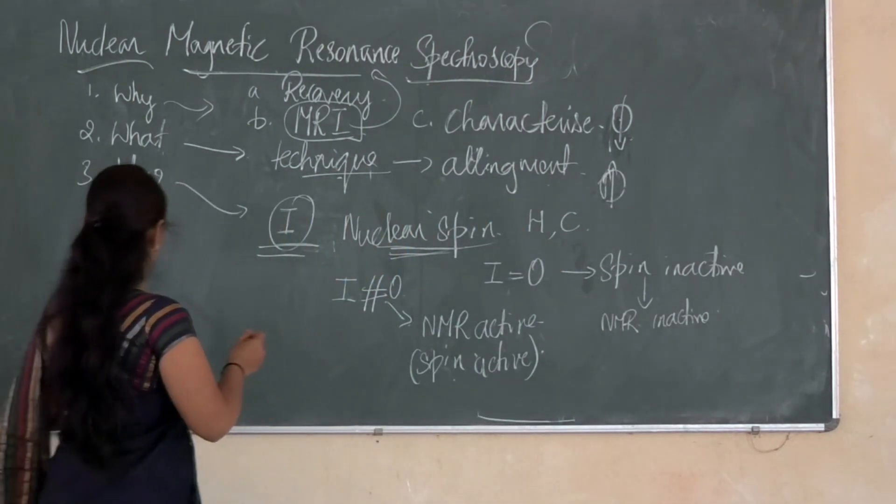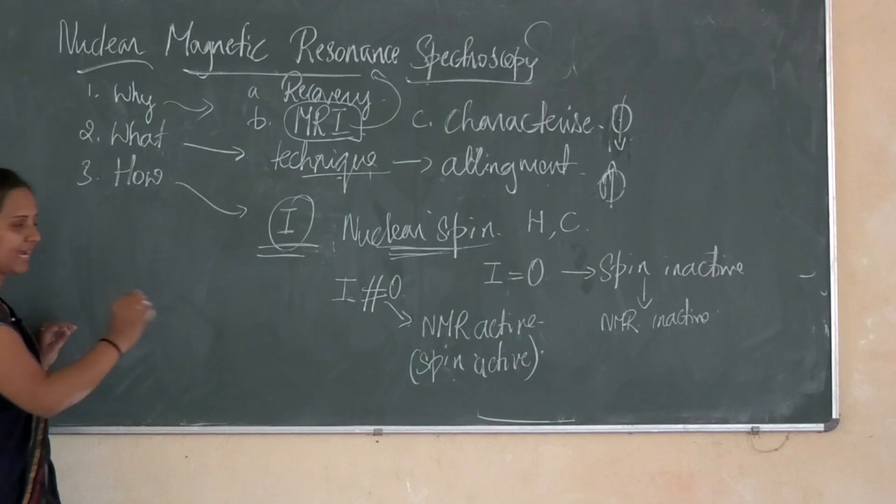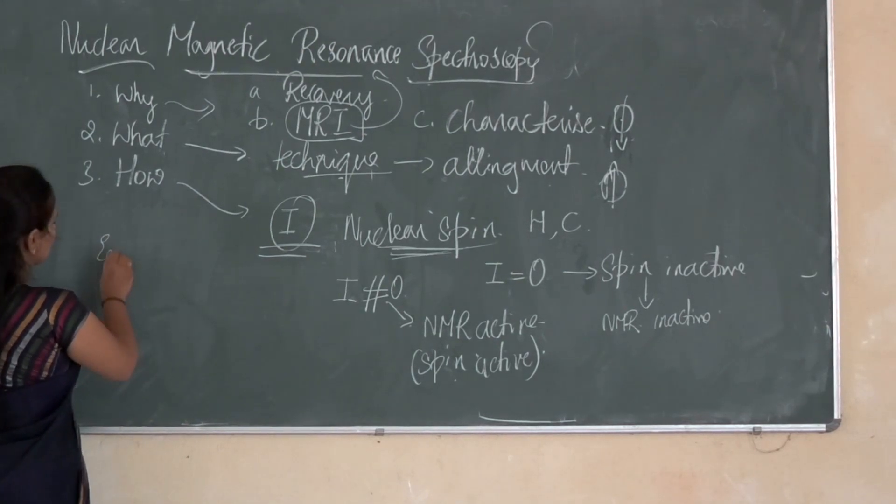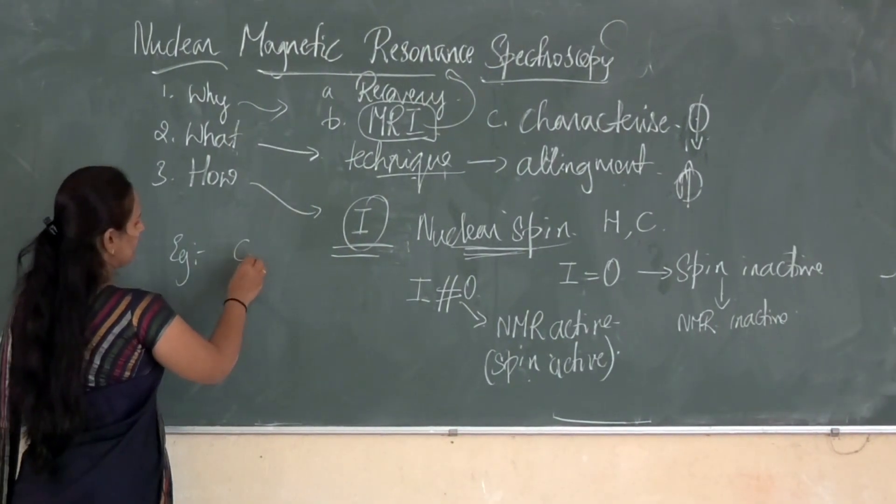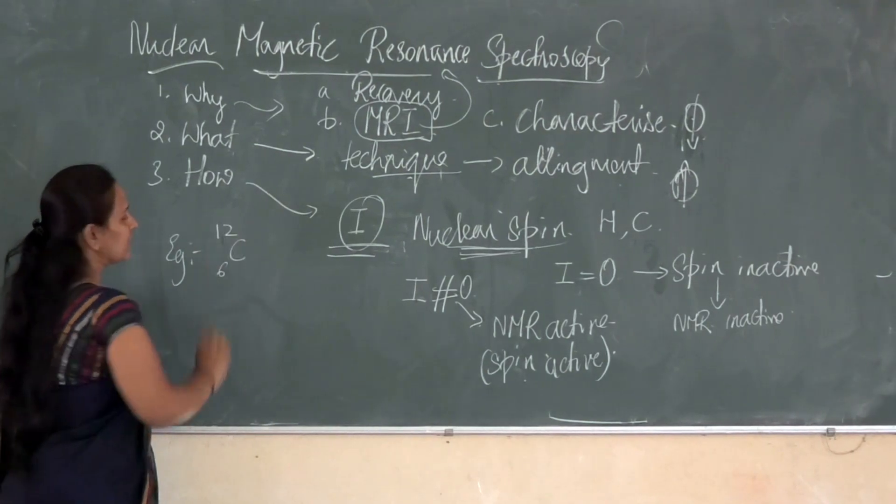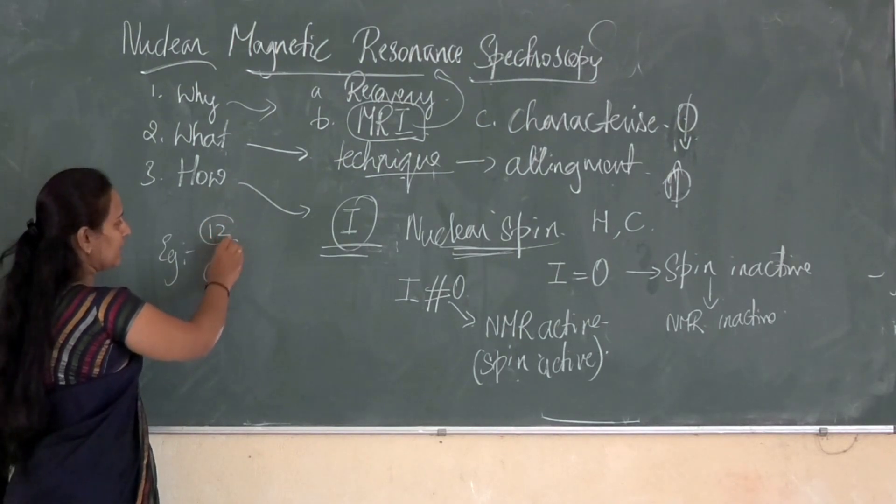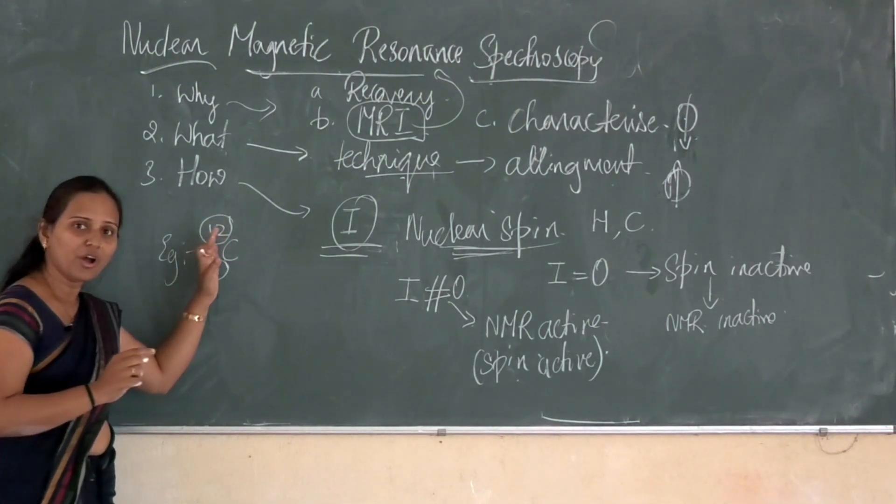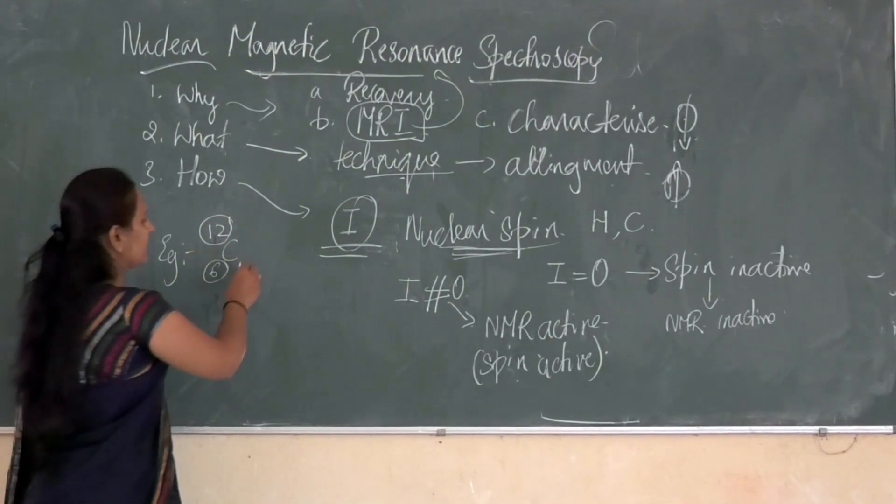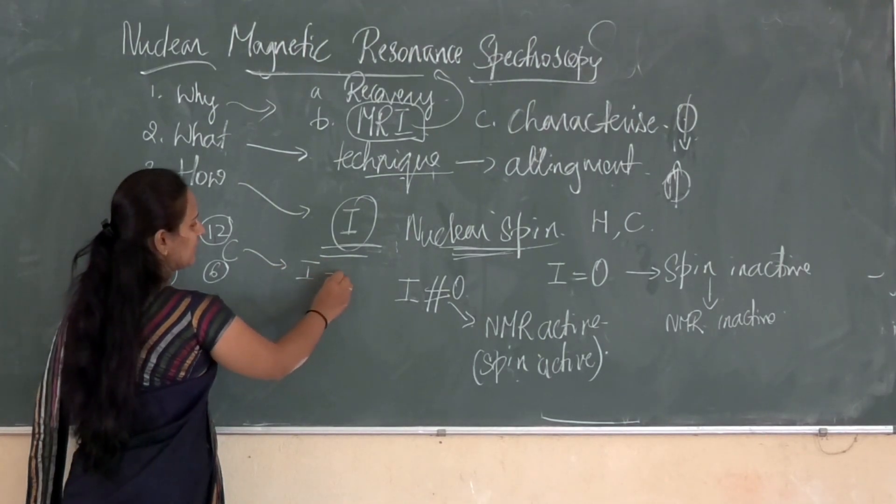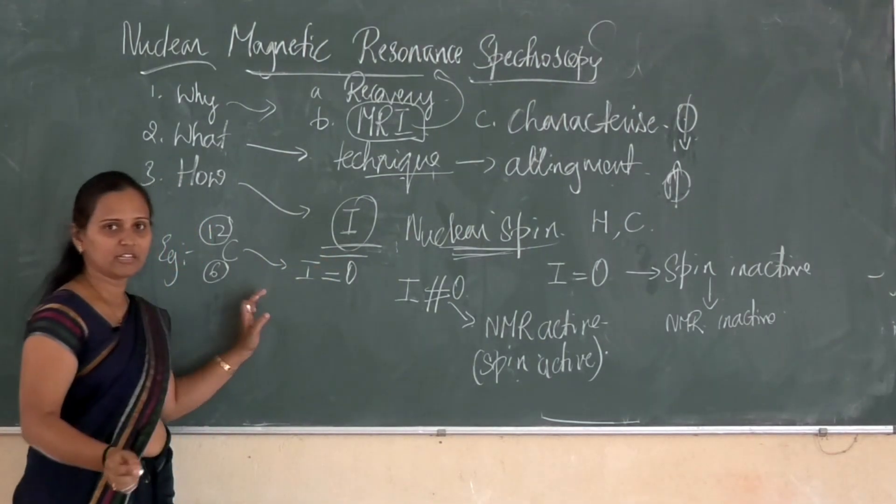If I give example for NMR active and inactive, the first example for NMR inactive. This is NMR inactive, where the atomic number and the mass number of the nuclei are even. In such cases or in such nuclei, the nuclear spin will be equal to zero.